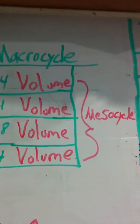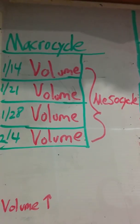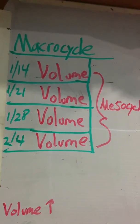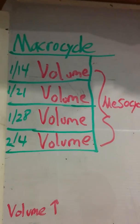Alright, so next we got our mesocycle. So as we said, the macrocycle is going over the entire training block, so maybe a 12-week block or 16-week training block going into a competition. So that's the big picture.